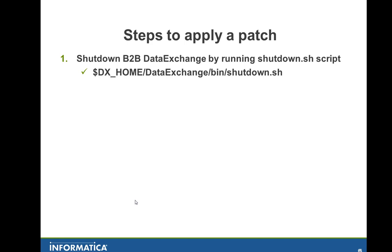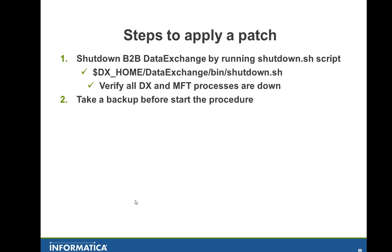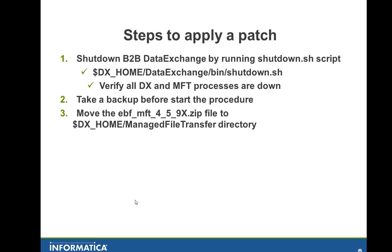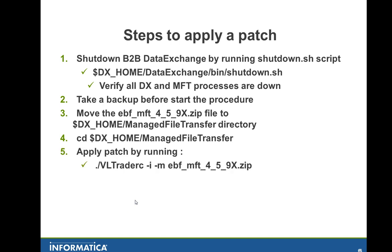The steps to patch it are as follows. First, shut down B2B Data Exchange by running the shutdown .sh script on Unix or .bat on Windows. After shutting down, make sure all DX and MFT processes are really down, and take a backup before starting the procedure. Move the EBF file to the DX home Manage File Transfer directory, then CD into that directory. After that, install the patch using the command: ./vltraderrc -i -m ebf_mft_459x.zip.